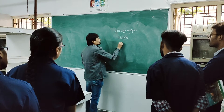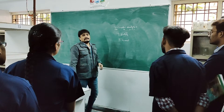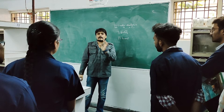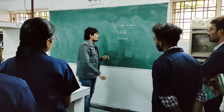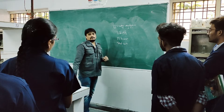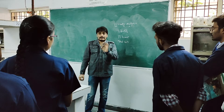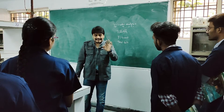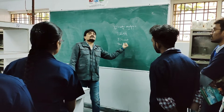The first term is titrant. The substance whose concentration is known is called as titrant. Next is standard solution. The solution whose concentration is known is called standard solution. Don't be confused — the substance whose concentration is known is titrant, and the solution whose concentration is known is standard solution.